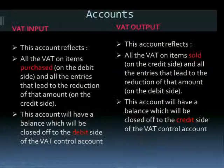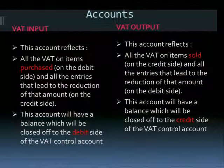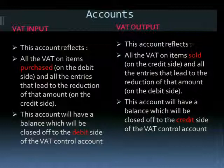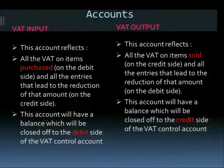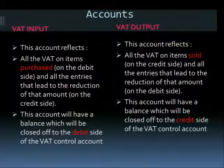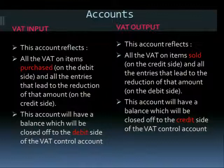VAT input and VAT output. The VAT input account reflects all the VAT on items purchased. Every time when you buy, we have VAT input. You take yourself as the business every time you do the financial statements. All the VAT on items purchased is on the debit side, and all entries that lead to reduction of that amount are on the credit side. When stock comes into the business, it is VAT input. This account will have a balance closed off as a debit balance on the VAT control account.